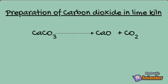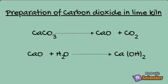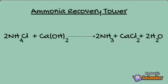The calcium oxide reacts with the water that was formed when we heated sodium bicarbonate to sodium carbonate. They both react and form calcium hydroxide, which goes to the Ammonia Recovery Tower. The ammonium chloride that was formed during the reaction in the Carbonating Tower, and the calcium hydroxide formed in the Lime Kiln, both react to form ammonia, water, and calcium chloride. The ammonia is reused while the other products go out.